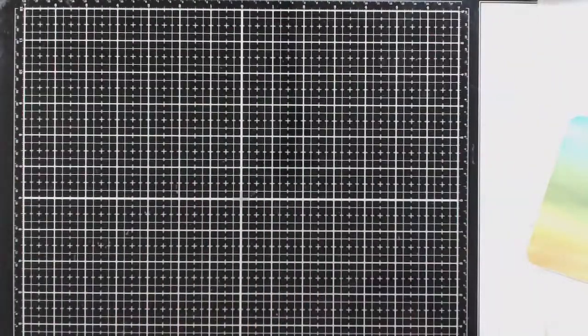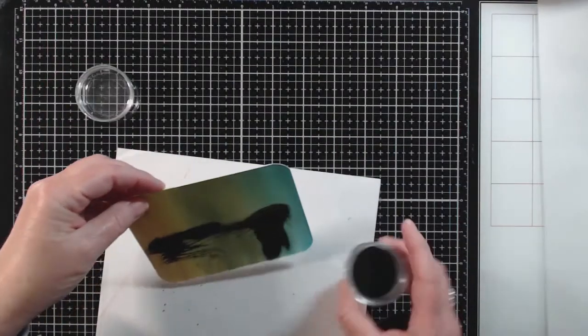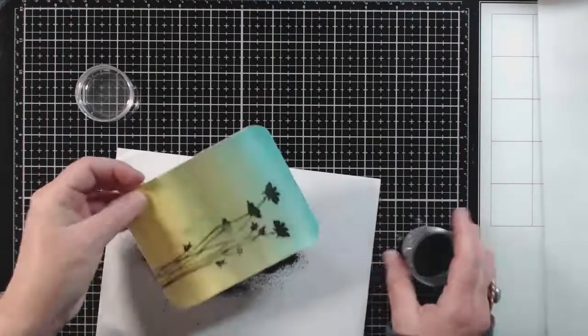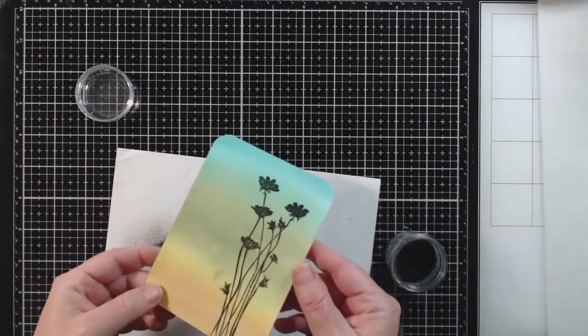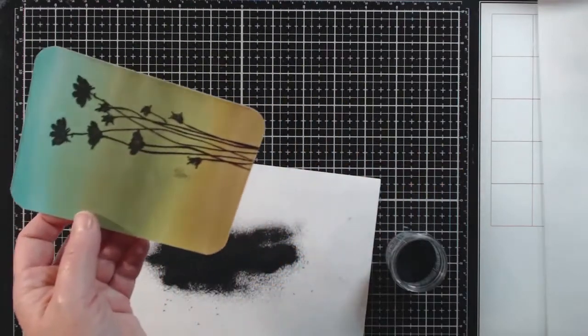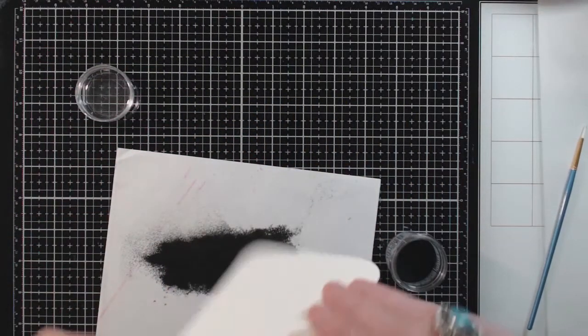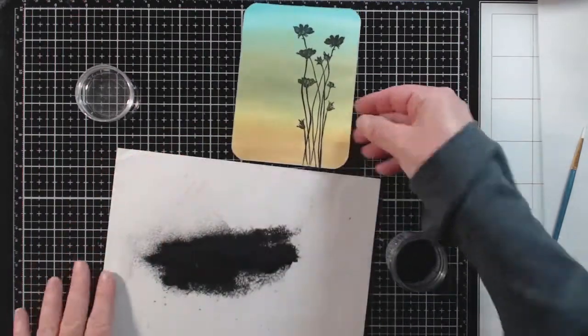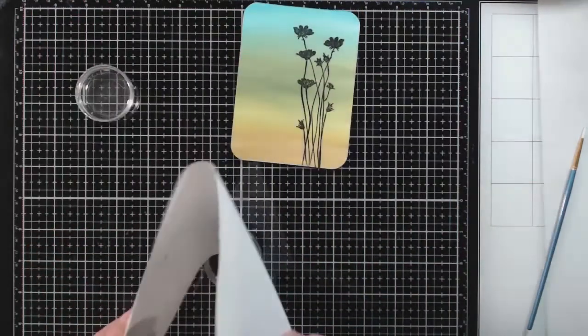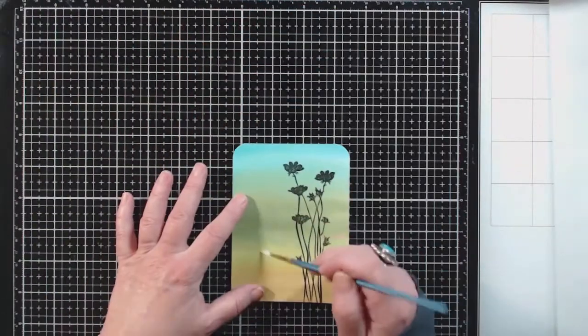But I find if you use that anti-static tool and just keep a fine paint brush on hand it can help you clean anything up that you need to clean up. So you can see there I have a couple spots where I have embossing powder that I don't want so I'm just going to brush that off. There's a couple more spots that I need to clean up and I'm going to do that right now with my brush again.